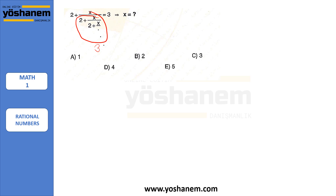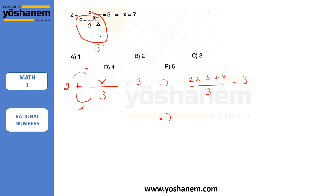So my question becomes 2 plus x over 3 equals 3. It's really easy to solve this: 2 times 3 plus x over 3 equals 3, so 6 plus x over 3 equals 3, and then 6 plus x equals 9. Bringing 6 to the other side, x equals 9 minus 6, so my x will be 3.